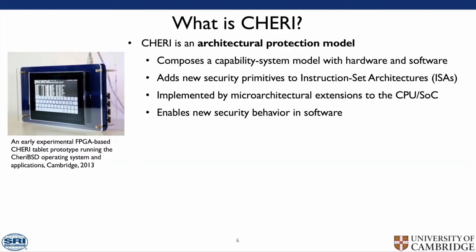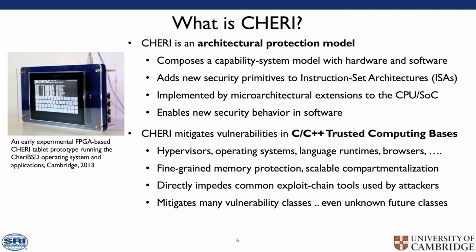CHERI is an architectural protection model that composes a capability system model with hardware and software. It adds new protection parameters to the instruction set architecture, implemented by microarchitectural extensions to a CPU, and enables new security behaviour in software. It is added to the instruction set for efficiency, so we can reason about it and perform instructions atomically. CHERI mitigates vulnerabilities in the C and C++ trusted computing bases — hypervisors, operating systems, language runtimes and browsers — providing fine-grained memory protection and scalable compartmentalisation. It directly impedes common exploit-chain tools and mitigates many vulnerability classes, even potential unknown classes.